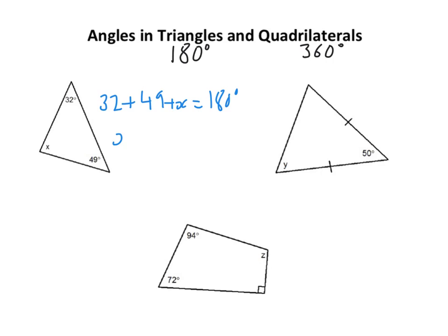On your calculator, or however you're asked to do it, whether it's a non-calculator or calculator question, you'd be taking 32 and 49 away from 180 and you should get 99 degrees.